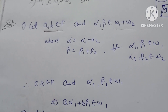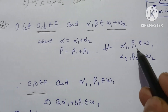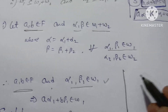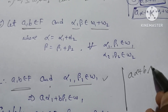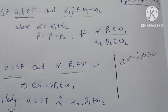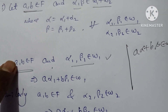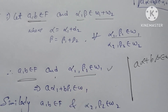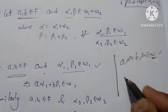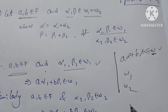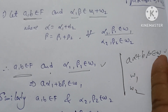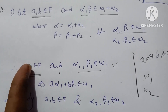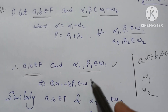A and B belong to F — the field. Just draw the first condition: alpha1 and beta1 belong to W1. The subspace condition is a·alpha plus b·beta belongs to W. This gives us a·alpha1 plus b·beta1 belongs to W1.